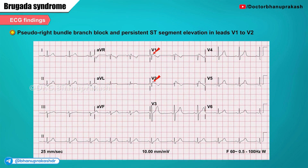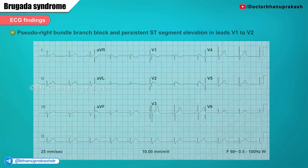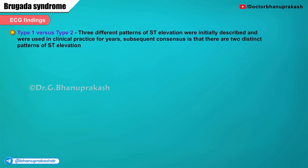Here's the 12-lead electrocardiogram of the Brugada pattern. In this ECG, you can note the presence of a pseudo-right bundle branch block and persistent ST segment elevation in the leads V1 and V2.